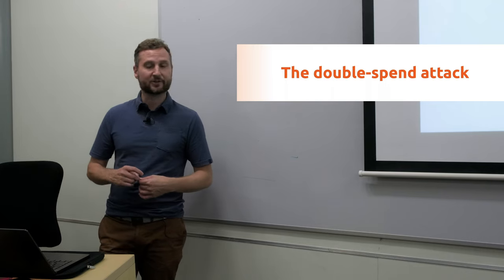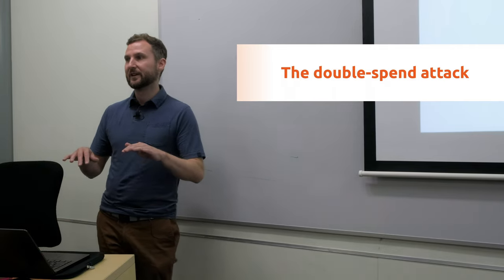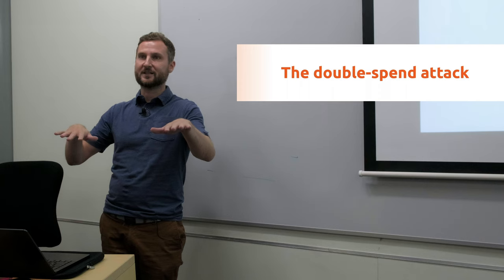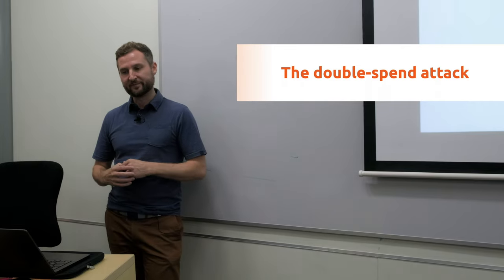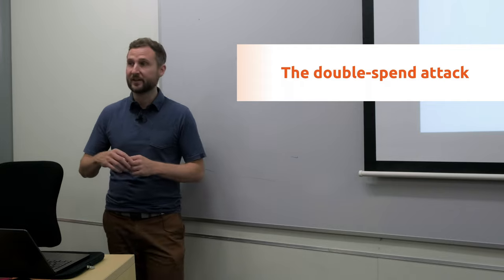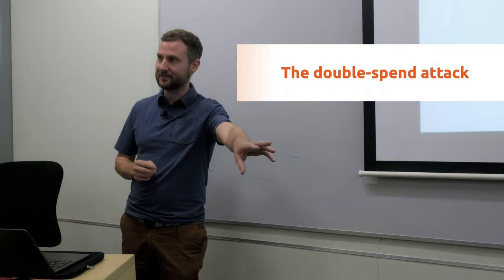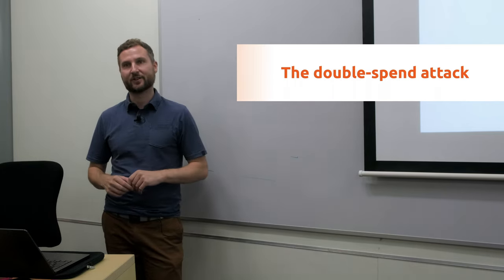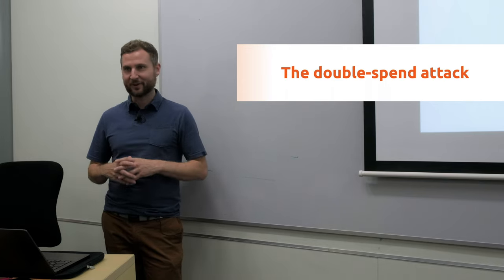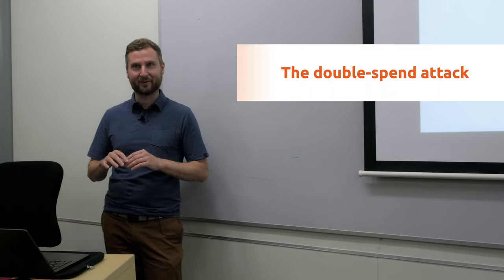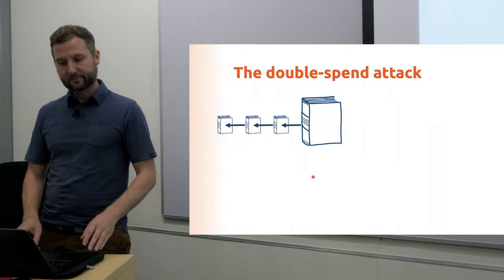The longest chain also solves this idea of the double spend attack. Double spending is being able to have some resource, convince two different entities to take your money, such that you then get double the services for the price of one. The double spend attack in Bitcoin would be to send your Bitcoins to a merchant, get some goods and services. At the same time you send the same Bitcoins to someone else to get some other goods and services. In the digital abundance, we shouldn't be able to send multiple Bitcoins out to multiple people, because that's not how money works.